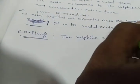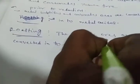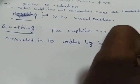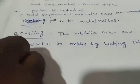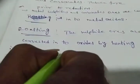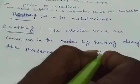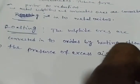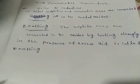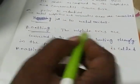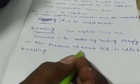The sulfide ores are converted into oxides by heating strongly in the presence of excess air — this is called roasting. Roasting means the sulfide ores are converted into oxide ores by heating strongly in the presence of excess air.